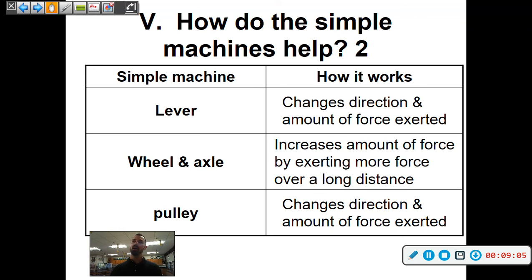Lever also changes direction and the amount of force exerted. Wheel and axle increases the amount of force by exerting more force over a longer distance. And pulleys change direction and the amount of force exerted. So again they're all pretty much the similar goal in the end, trying to make work easier in some way.